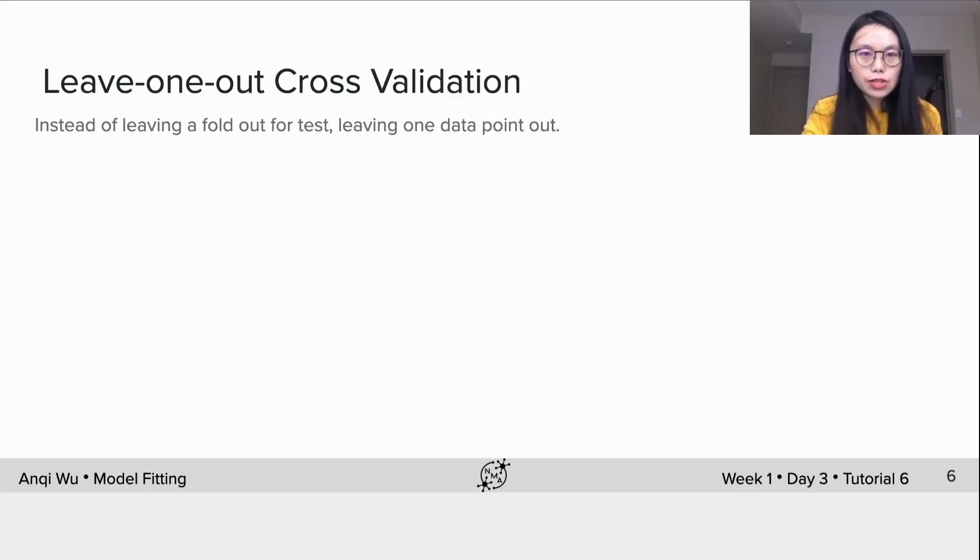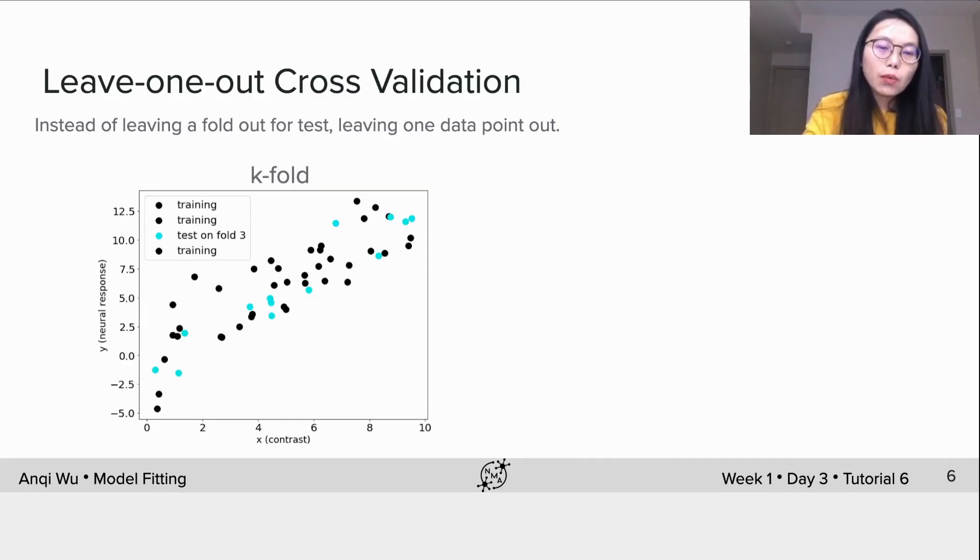Another cross-validation solution is called leave one out cross-validation. Instead of leaving a fold out for test, we now leave only one data point out. So in k-fold, we have multiple points in the test sets, right?